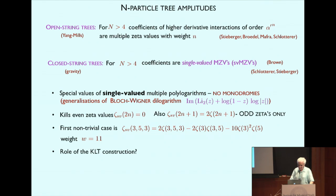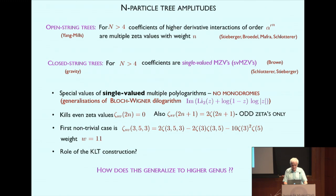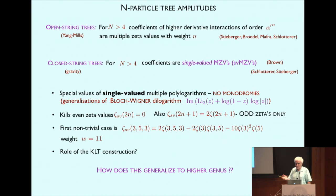That was a crash course in multiple zetas. The closed string tree amplitudes are expanded with coefficients that are single-valued multiple zeta values. The question we want to address is how this generalizes to higher genus. Mathematicians are interested in this for their own reasons — which, whenever I've asked them, seem to involve physics anyway. For us, the obvious next step is to look at the genus-1 amplitude, which gives an elliptic generalization.